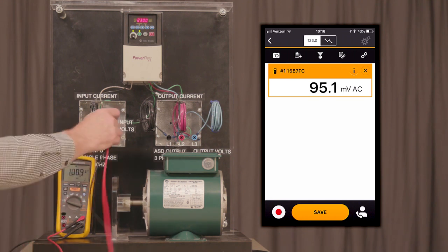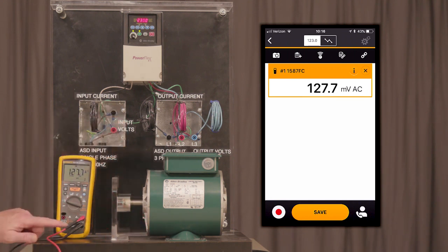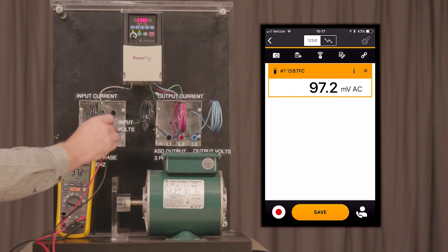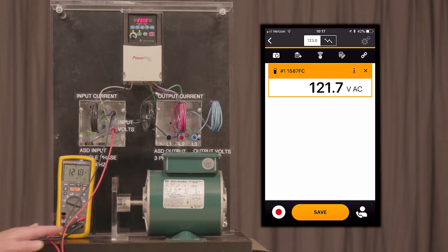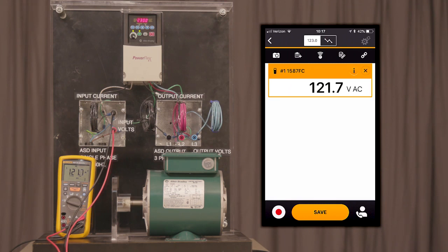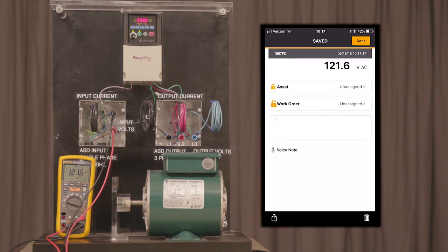So let's do some voltage measurements on the input voltage for the drive. I'm going to turn my meter over to volts and confirm it's there. Let's make sure the test leads are put in the correct position, and we can make our input voltage connection. As you can see, the input voltage going into our VFD is 121 volts.